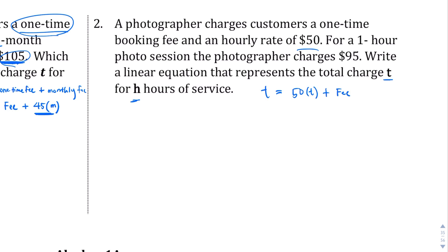We are told that for a one-hour photo session, the total comes out to $95. So $95 is the total. And after that one-hour session, so I'm going to put 1 instead of H, that'll tell us what the fee is. $50 times 1 is $50. So let me rewrite this: $95 equals $50 plus the fee.